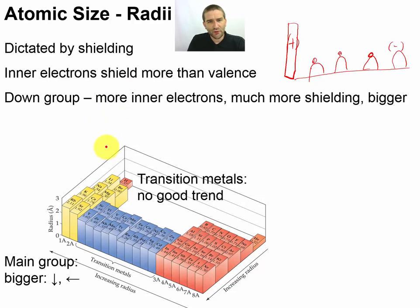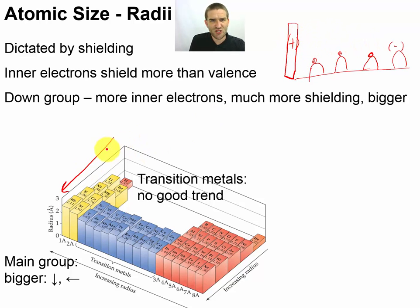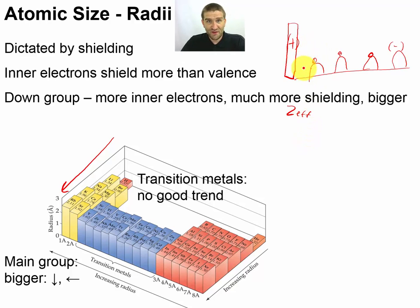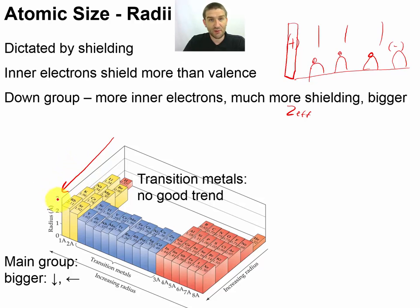As we come down these groups, what we're seeing is a deeper and deeper movie theater. The plus charge is getting bigger at the same time as the shielding is getting bigger, so within each group the shielding is going to be increasing and Z-effective is going to stay the same as you go down a group. The effective nuclear charge isn't changing, but you are adding more movie theater rows, and that means your radius is getting bigger and bigger as you go down the table — and that is an intuitive relationship.